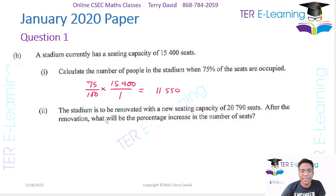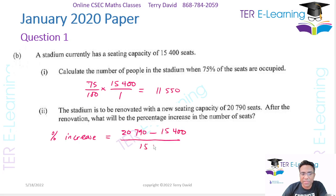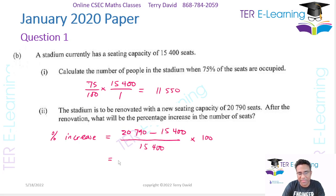The stadium is to be renovated with a new seating capacity of 20,790. After renovation, what will be the percentage increase? To get the percentage increase, we take the new value minus the original value, divided by the original value, multiplied by 100. So: 20,790 minus 15,400, divided by 15,400, multiplied by 100 — that gives 35%.